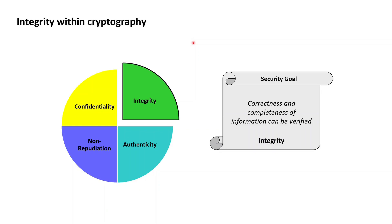Integrity, as another classic security goal of cryptography, is the goal demanding that the correctness and completeness of information can be verified. Correctness of information means that every bit of that information is exactly the zero bit or the one bit expected to be there, and completeness of information means that the information neither misses a single bit nor has a single additional bit that's not supposed to be there.